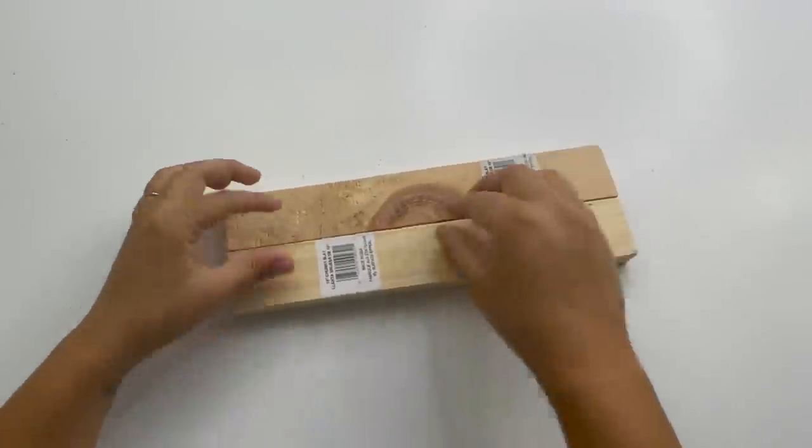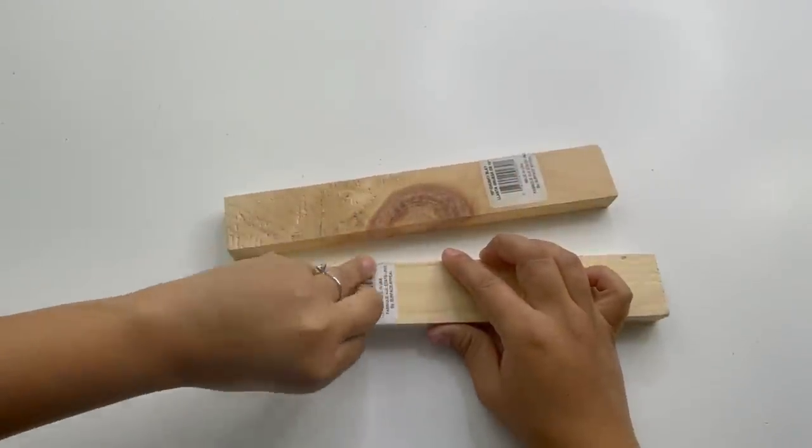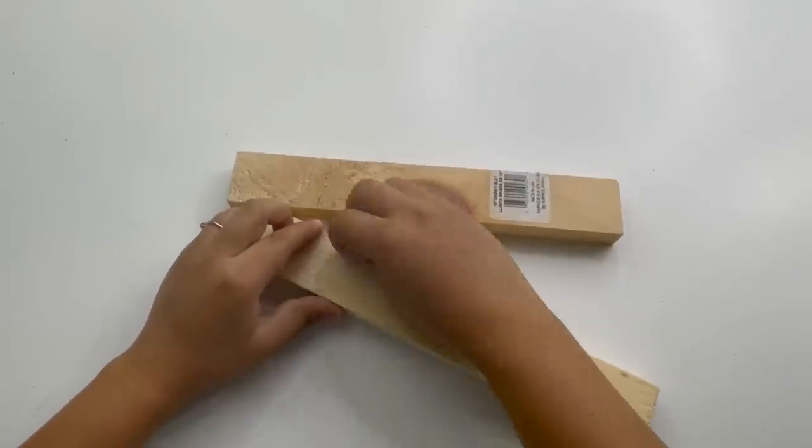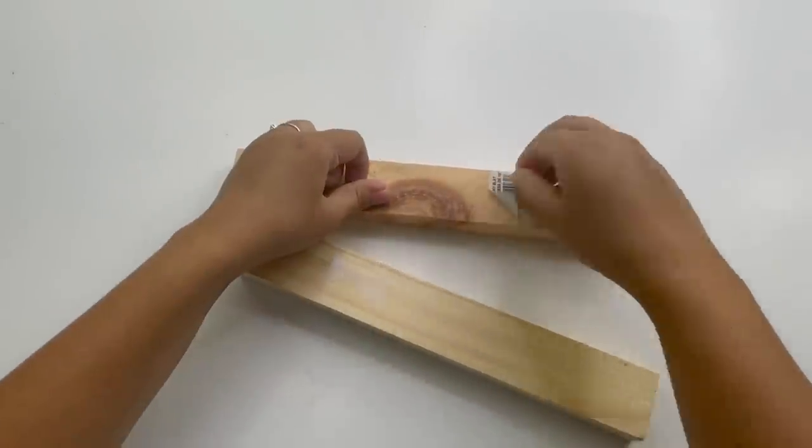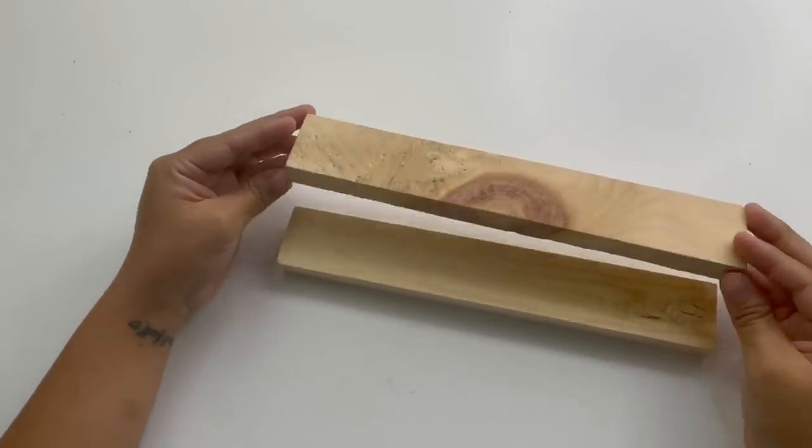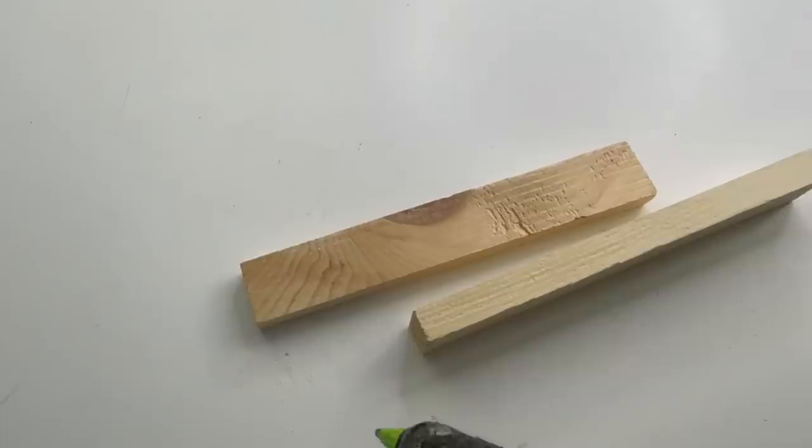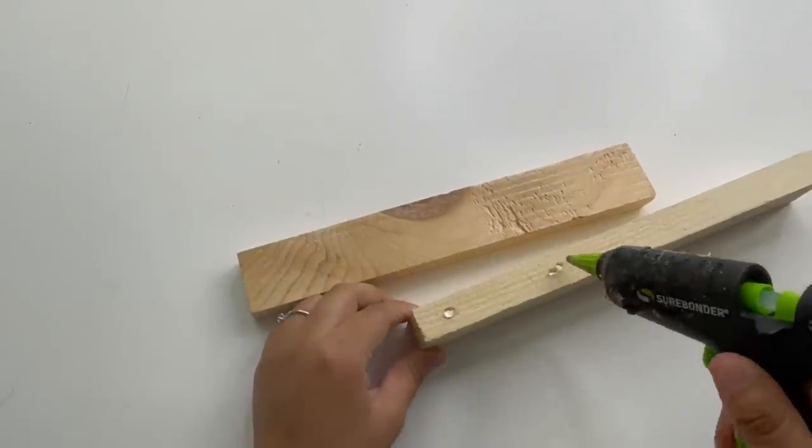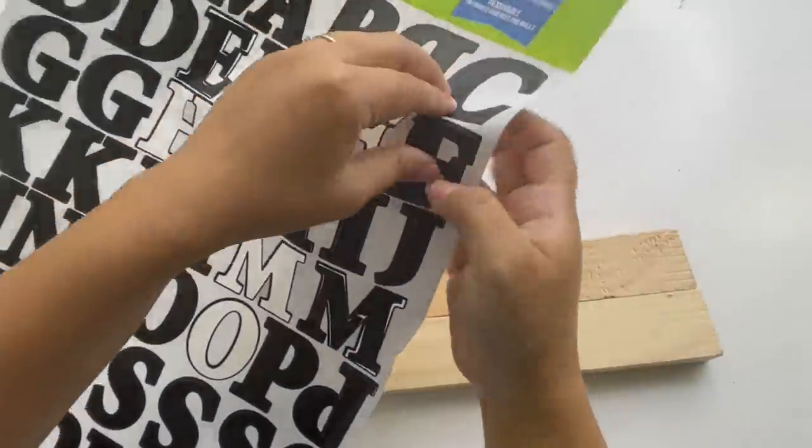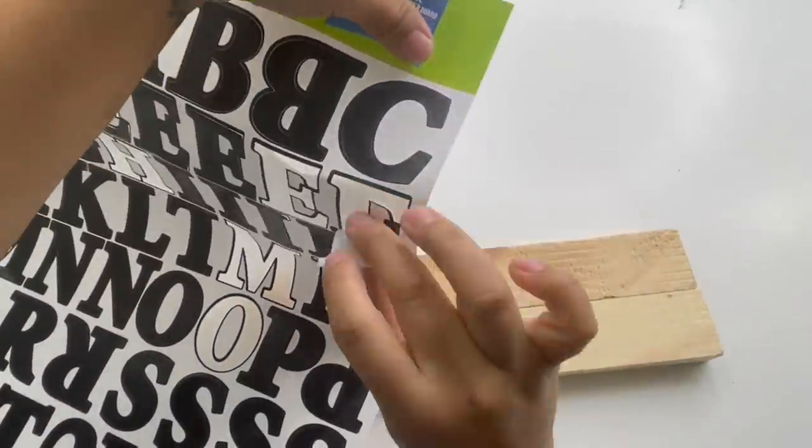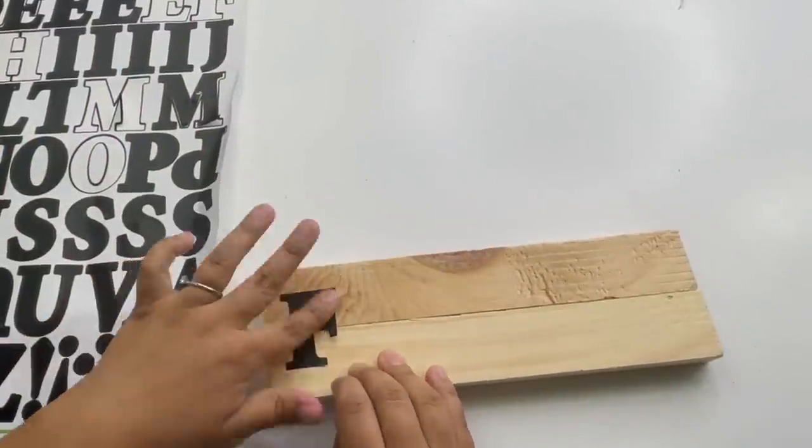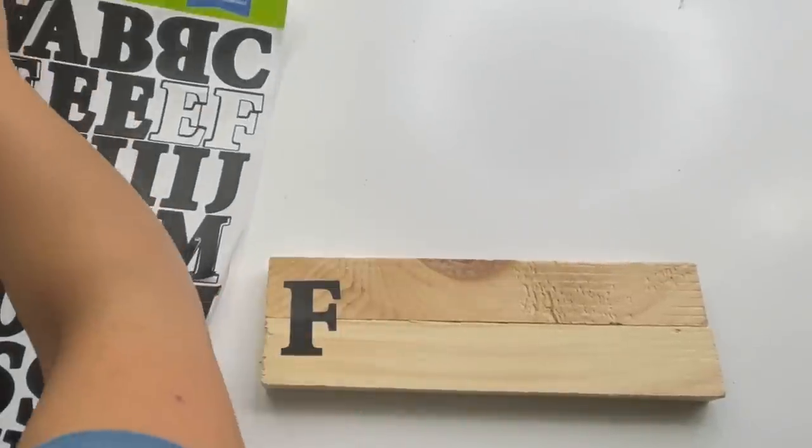For my second project, I will be using two of these Dollar Tree wood pieces and I'm going to glue these together using a combination of wood glue and hot glue. For this project I will be doing some reversible stencils, so I'm using some of these poster sticker letters from the Dollar Tree and I'm putting the word family on this.